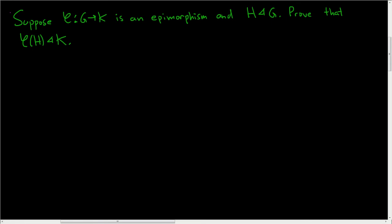Suppose that φ from G to K is an epimorphism. That means it's a group homomorphism and it's onto. And H is a normal subgroup of G. We want to prove that φ(H) is a normal subgroup of K.